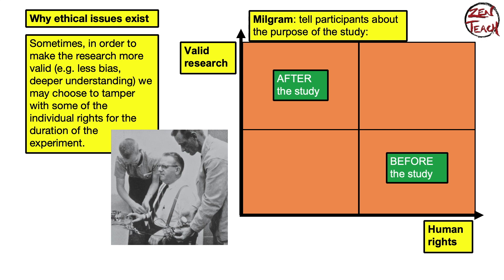Let's look at an example from our curriculum — the Milgram study from social influence. Participants had to administer electric shocks to actors, with increasing voltage. If you tell participants the purpose of the study beforehand — that we're measuring obedience to commands — that undermines the research and lowers validity. You end up with low research quality, though you're fine in terms of human rights.